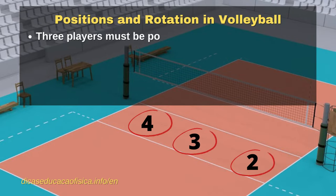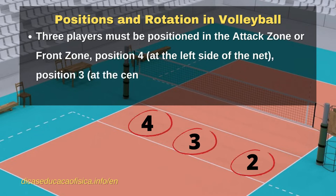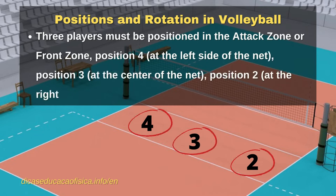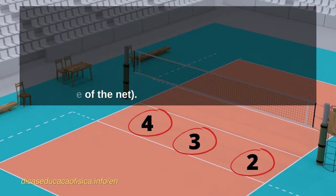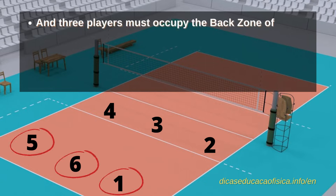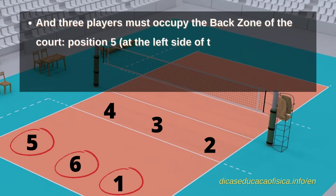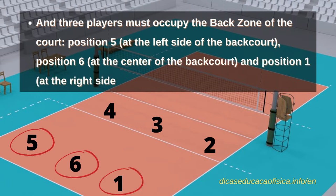Positions and rotation in volleyball. Three players must be positioned in the attack zone or front zone: position 4 at the left side of the net, position 3 at the center of the net, and position 2 at the right side of the net. Three players must occupy the back zone of the court: position 5 at the left side of the back court, position 6 at the center of the back court, and position 1 at the right side of the back court.